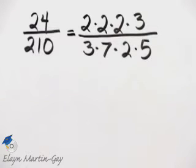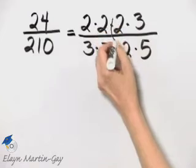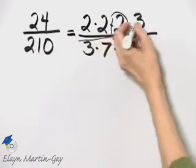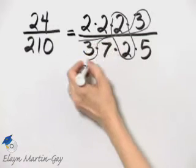Once we prime factor the numerator and the denominator, we can see if there are any common factors. Notice there's a common factor of 2 and also a common factor of 3.